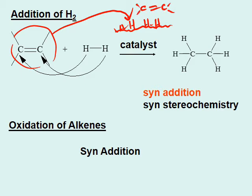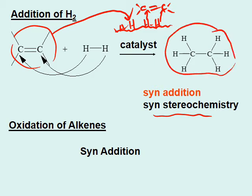The only way the alkene can get bonded is when both hydrogens come from the same direction. So there's no way it can undergo anti addition. The only possible product is the syn addition product — we often call this syn stereochemistry. Addition of hydrogen happens in a syn manner, and when cis-trans isomers are possible, you would expect a cis isomer.